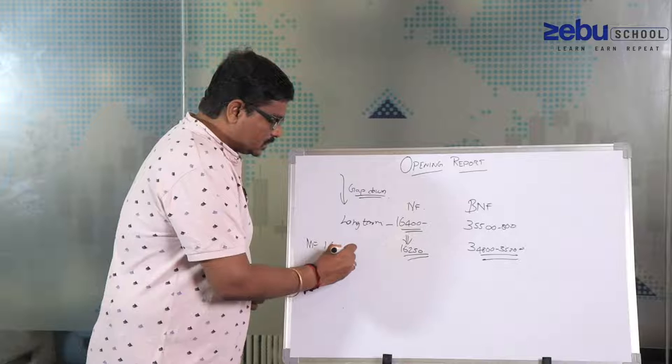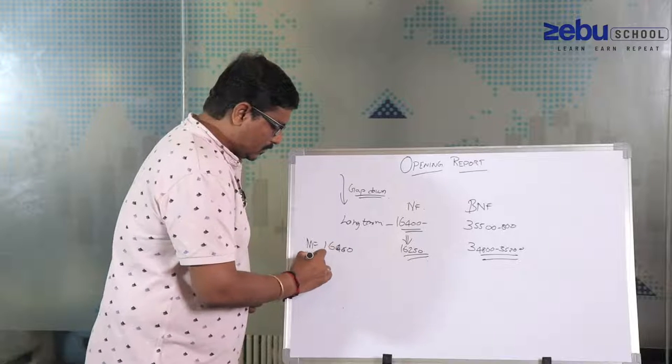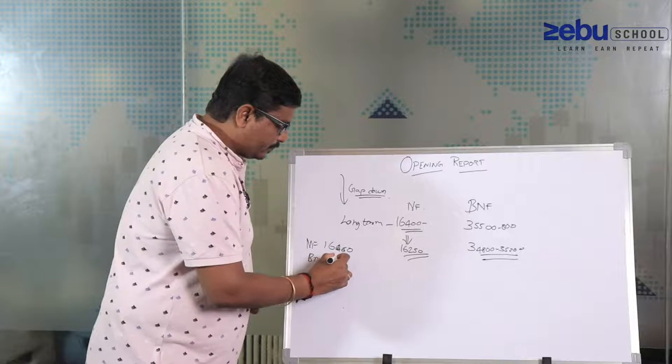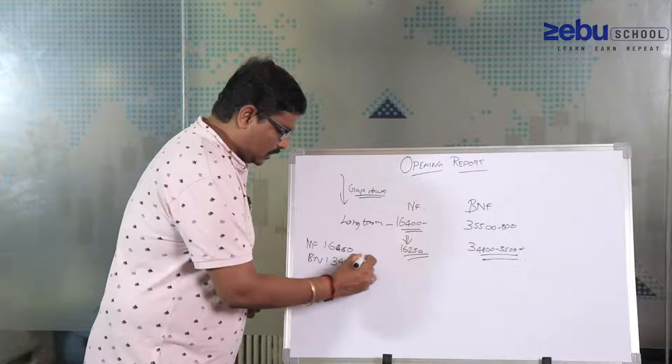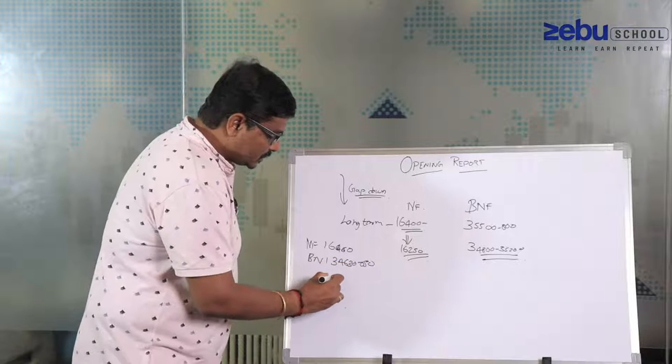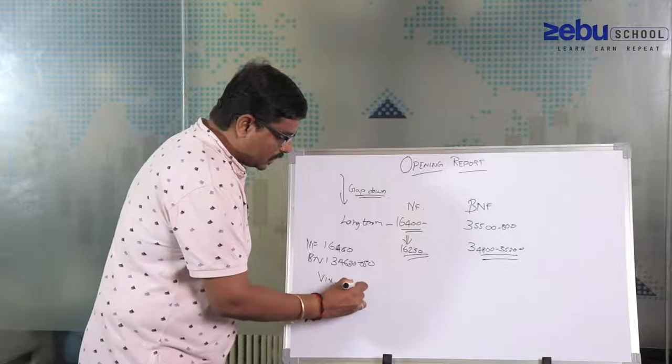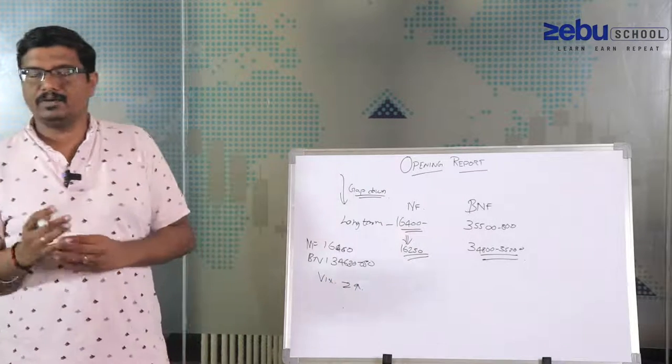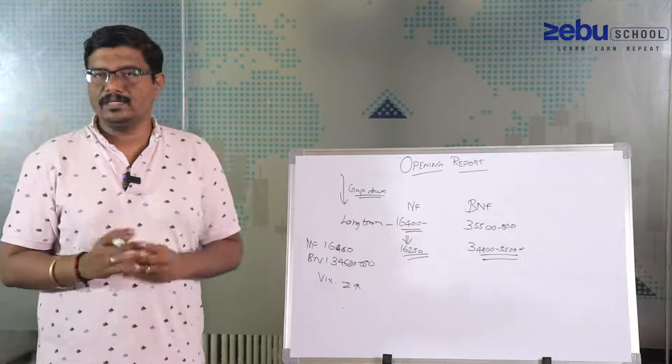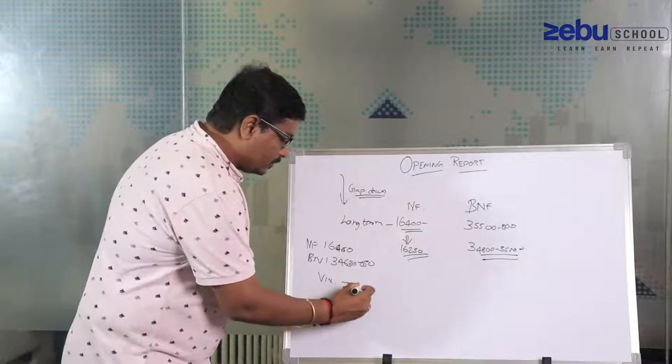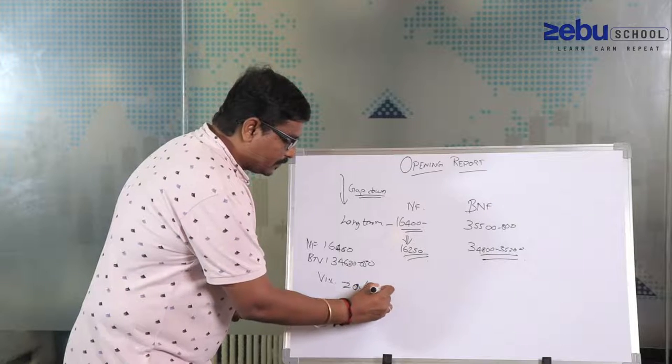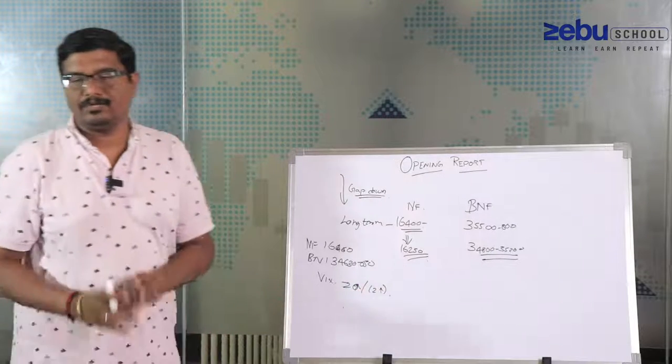16,460 levels and Bank Nifty is somewhere around 34,630 to 650 zone. Moreover, VIX is again 2 percent up but not bigger compared to the last few days volatility. VIX was not bigger, even it is trading somewhere around 20 and up by 2 percent.